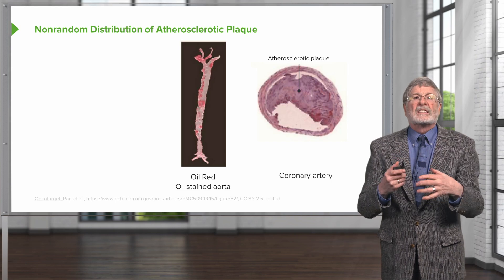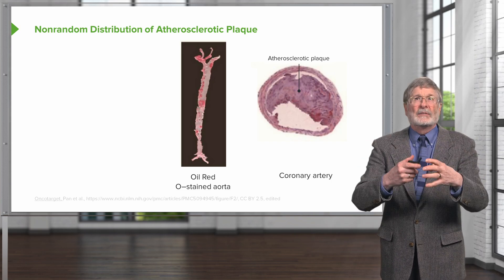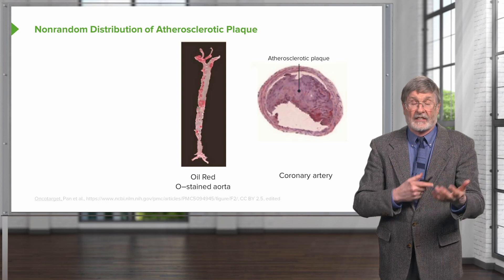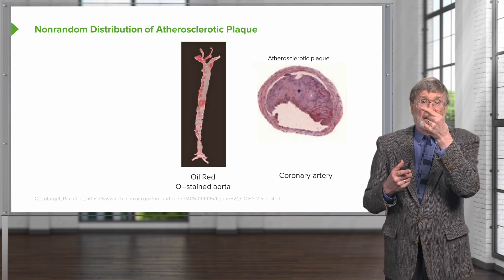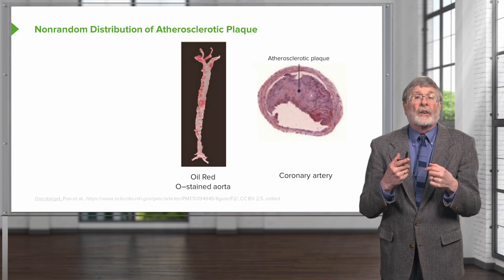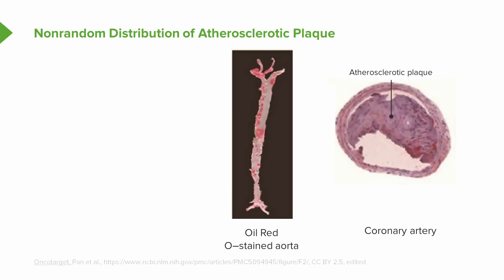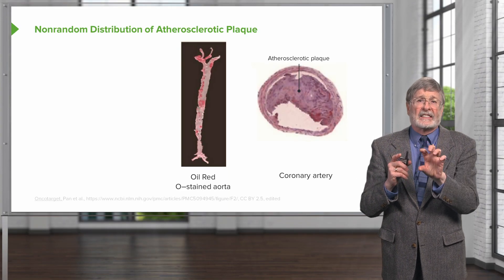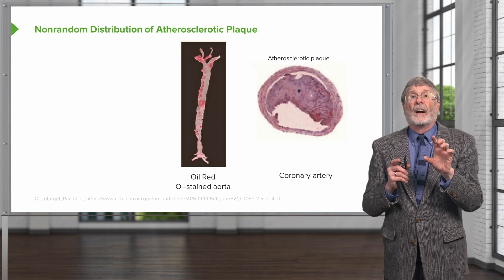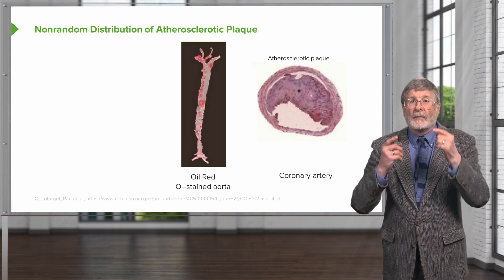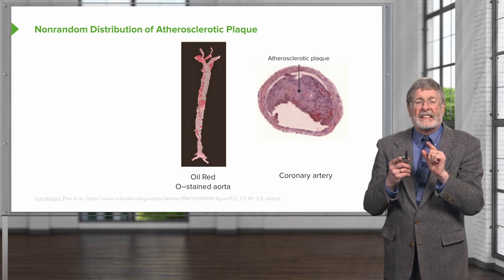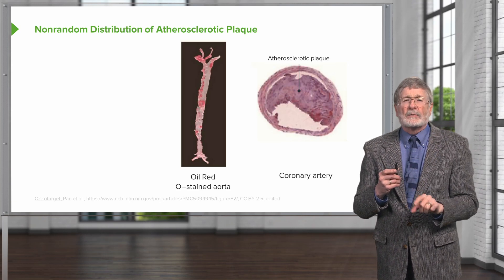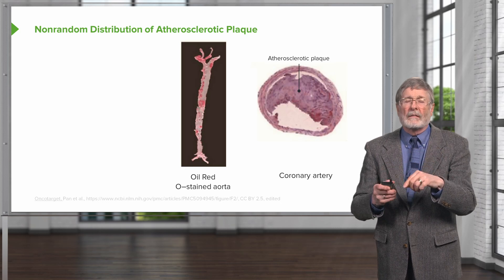Even though this entire aorta was subjected to the same evil humors in cigarette smoke, hypertension, diabetes — all of that. The image on the far right is a coronary artery. The circle all the way around it is the typical medial smooth muscle of the normal arterial wall. That semicircle of pink in the upper two thirds of the vessel is atherosclerotic plaque. Note that part of the vessel has atherosclerosis, while the bottom part of the vessel is absolutely pristine — thin wall, no atherosclerosis.